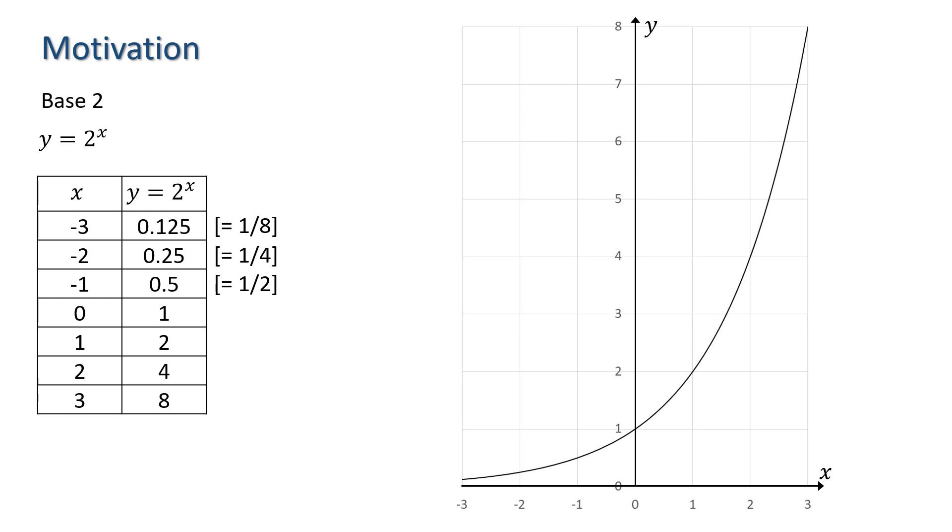Now, let's think about this a little. If we take a value of y between 1 eighth and 8, we can get a value of x from this graph. So, for example, if we take y equals 2, we have x equals 1. And if we take y equals 3, we have x is approximately 1.6. And if y equals 5, x is approximately 2.3.